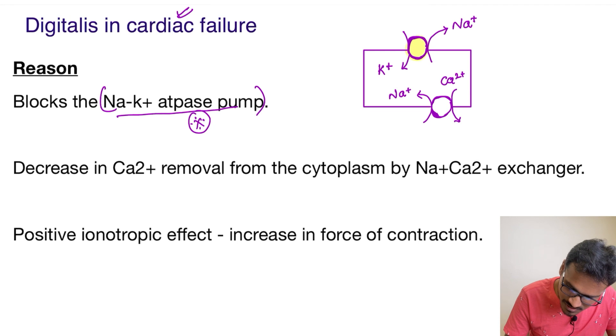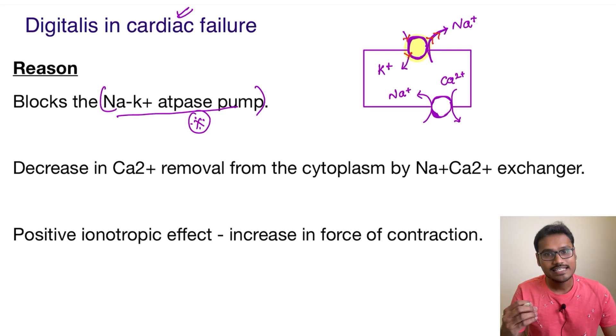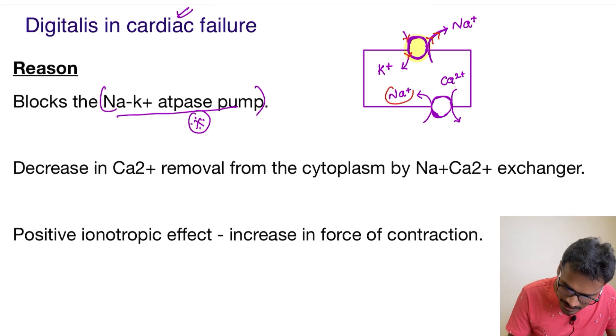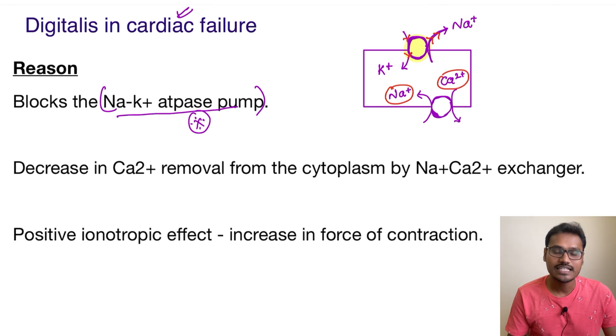See the diagram here. Suppose this is a sodium-potassium pump. What is the function of the sodium-potassium pump? It pumps out sodium and pumps in potassium. There is one more pump acting in the cardiac muscle called the sodium-calcium exchanger. This pump removes intracellular calcium after contraction of the cardiac muscle.